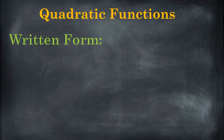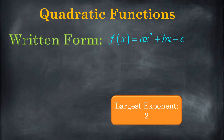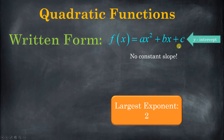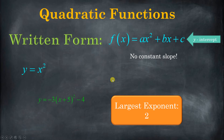Next up: quadratic functions. In written form, a quadratic function is going to look like ax squared plus bx plus c — that's standard form. There are other ways to write it too, but the thing you're going to look for is that the largest exponent is two. Because the largest exponent is two, this is not going to have a constant slope. It still has a y-intercept — whatever this number c is. If you put a zero in for the x's, you're left with zero plus zero plus c, so your y-intercept is zero comma c. Examples include y equals x squared and vertex form. In all of these, the biggest exponent is two — those are quadratics.